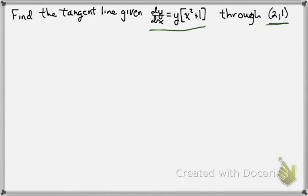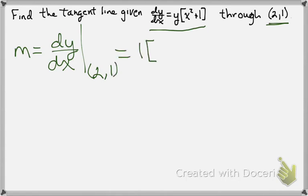Our point is going to be (2, 1). So the slope of our line is going to come from evaluating our derivative at the point (2, 1), which is just a matter of plugging in our values into the given derivative. So we have 1 times the quantity 2 squared plus 1, which is 5.